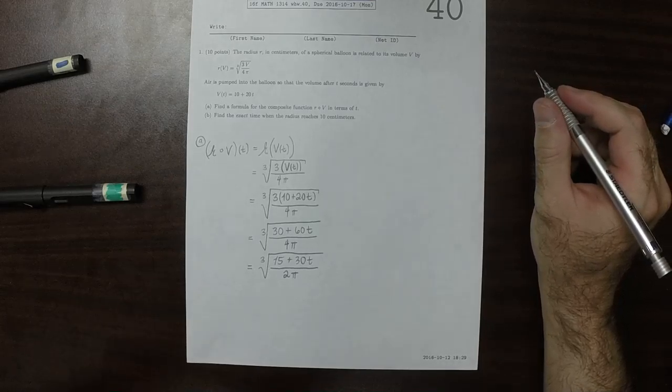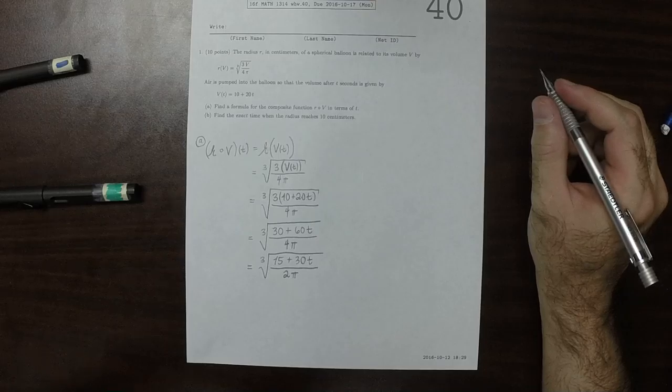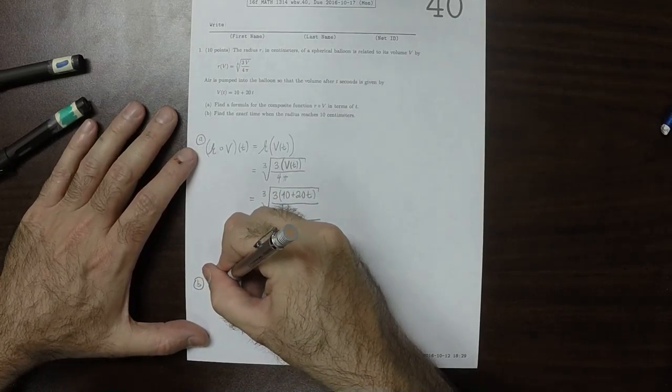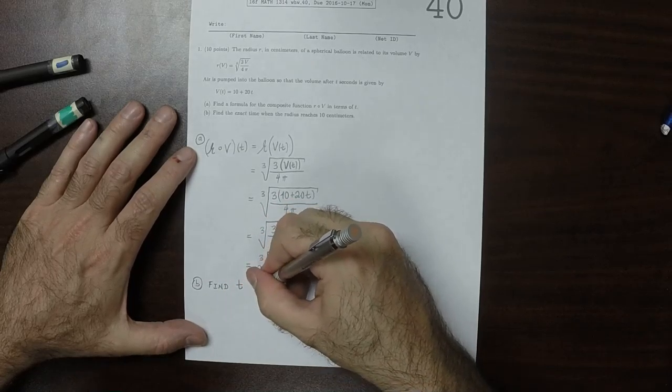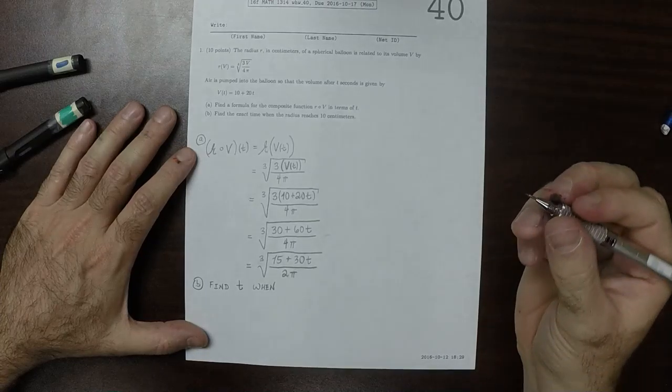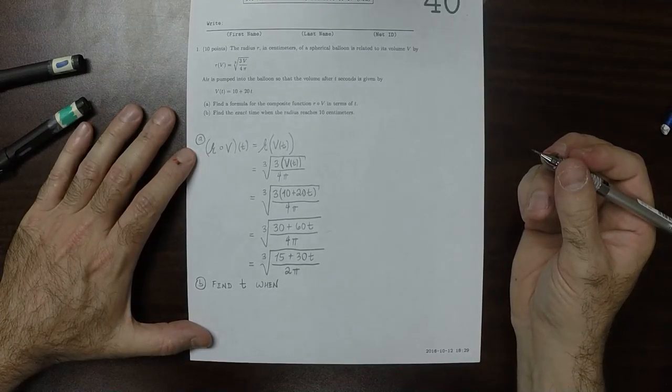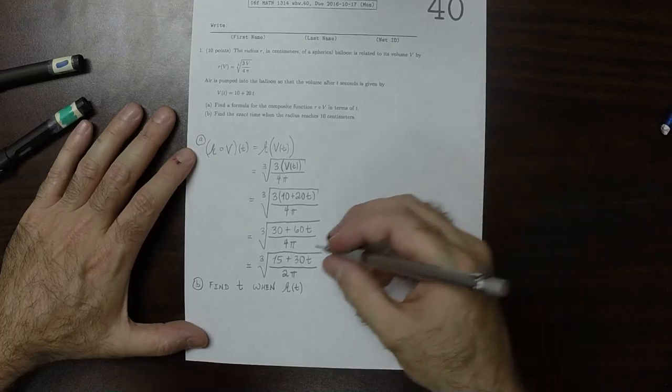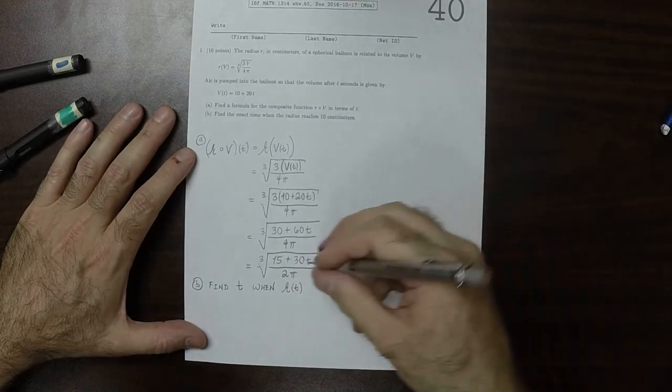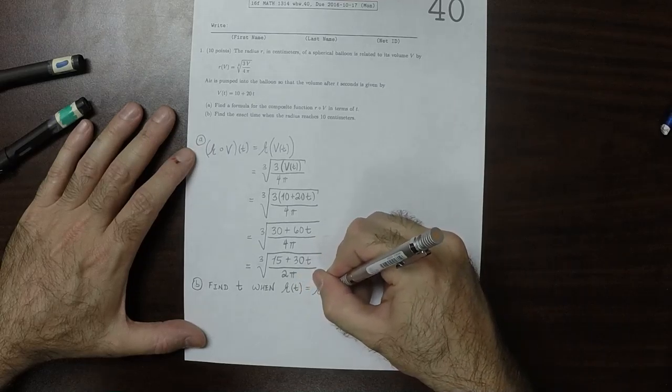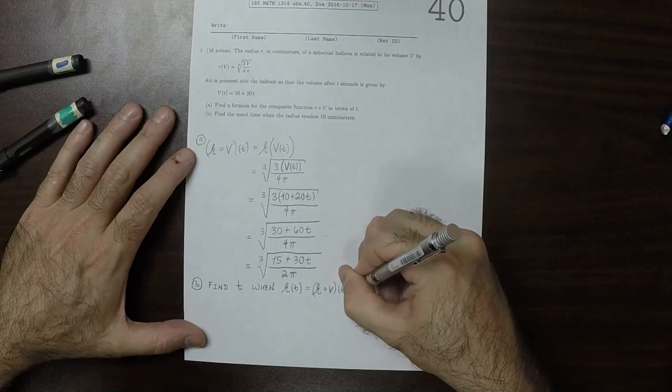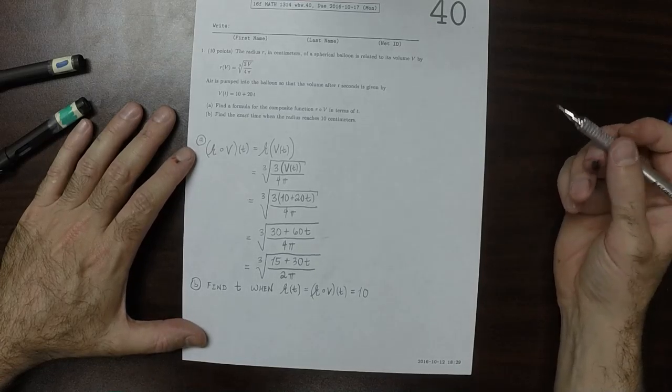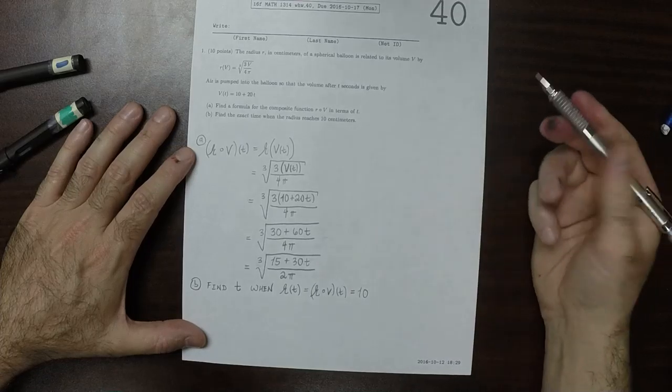So find the exact time when the radius is 10 centimeters. Okay, so for part B, the request is to find T when R of T, that is to say R circ V of T, is 10. Okay, so that means take your answer in part A and set it equal to 10 and solve.